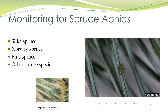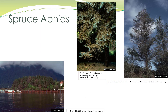Spruce aphids are a real problem in our area, mostly on blue spruce — Colorado blue spruce in particular in the Seattle area — but they can affect Sitka spruce, Norway spruce, and other spruce species. They're very tiny, about 1/16 of an inch, and you can see the damage and how tiny they are on the needles. The lower left image shows Sitka spruce where many trees have been killed by this pest. The right image is also a Sitka spruce, and the middle is probably a Colorado blue spruce, very commonly seen in the Seattle area.